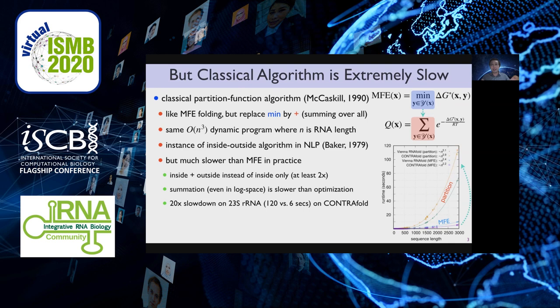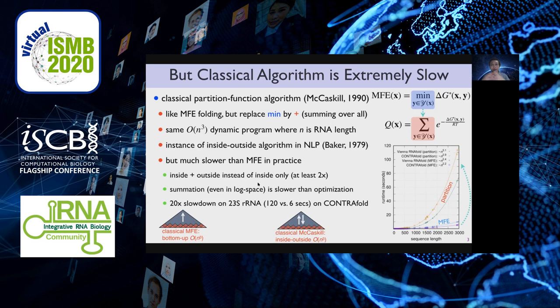This is clearly very useful but it's just very, very slow. The classical algorithm from 30 years ago, the McCaskill algorithm, is very much like MFE folding — like the Zuker algorithm — but you simply replace the minimum in MFE by a sum. There's another difference: now you need both inside and outside, instead of a single inside. It's the same cubic time dynamic programming algorithm where n is the sequence length, but it's much slower than MFE in practice. One reason is the inside and outside — you're at least two times slower — and secondly, summation is much slower than minimization because you need to compute in exp space. As a result, MFE is fast and partition function is about 20 times slower on the longest sequences like 23S ribosomal RNAs.